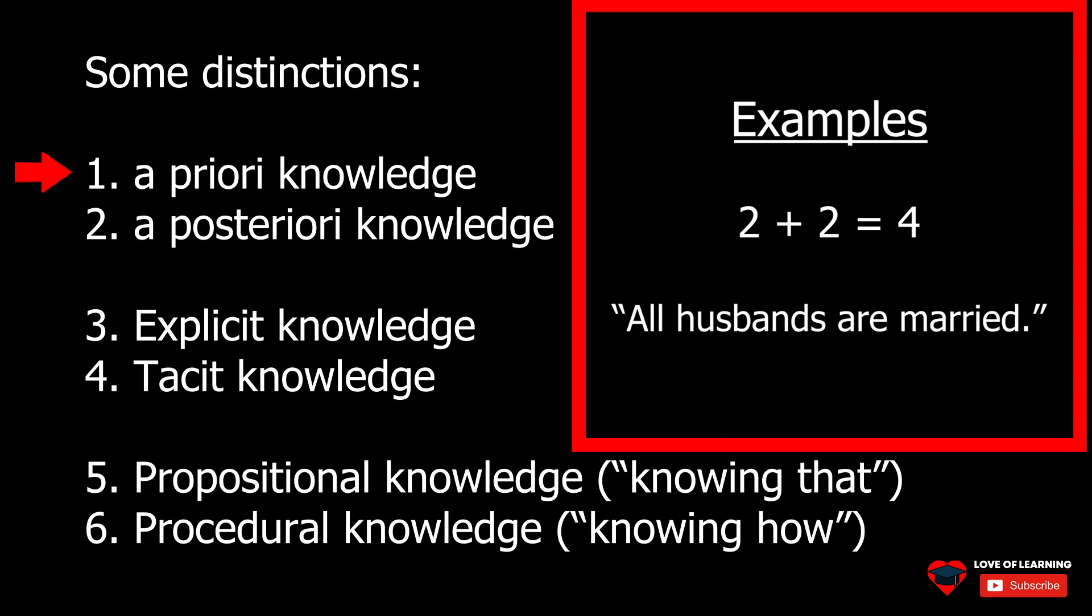Another example of a priori knowledge is the sentence all husbands are married. One knows that it is true by understanding the meanings of the words it contains. Because husband means married male, it is true by definition that all husbands are married.